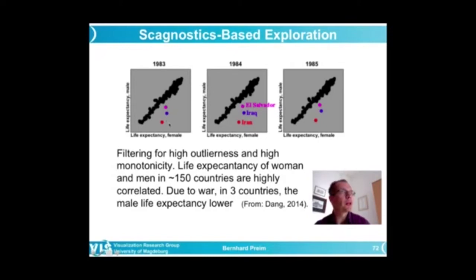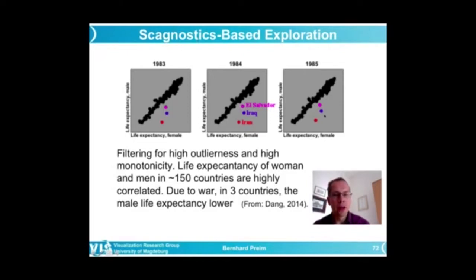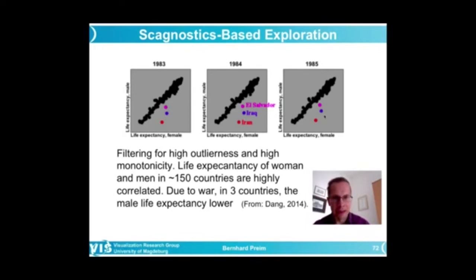If you search for scatterplots with a higher value of outlierness, you would locate these scatterplots where three countries have a rather low life expectancy for males, although the female life expectancy is higher. This is because these countries in the years 1983 to 1985 had a war. Many males died in the war and the number of females that died was considerably lower. The soldiers are predominantly male, and moreover, soldiers are quite young — around 20 years on average — so that has a clear influence on life expectancy.